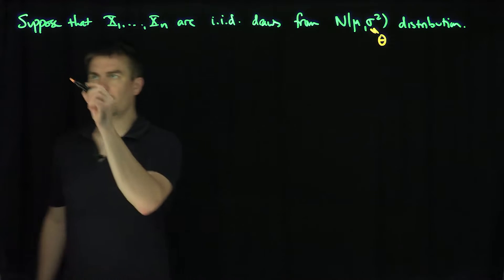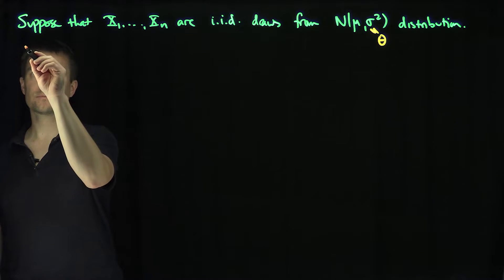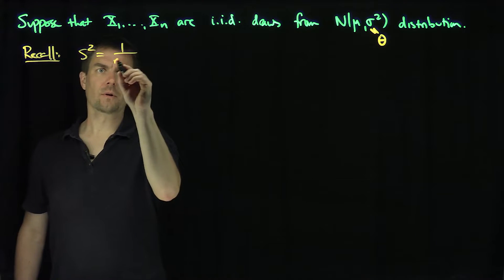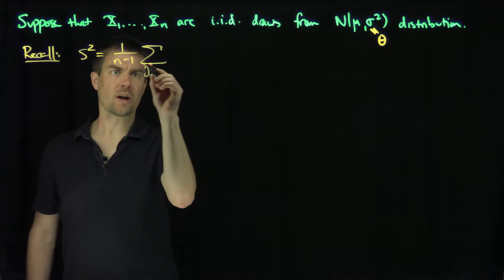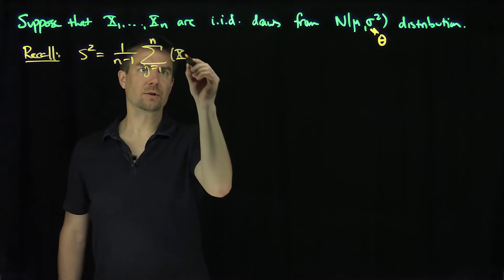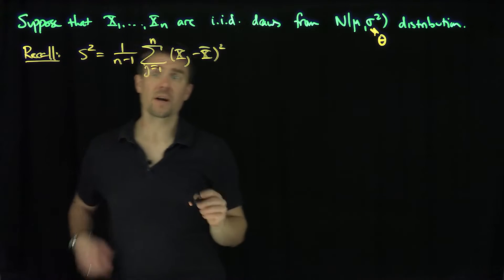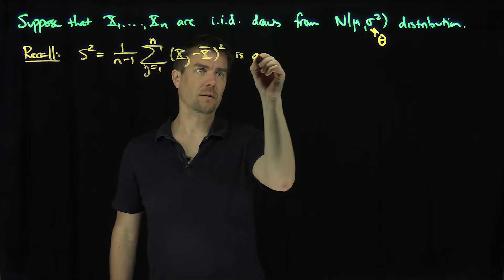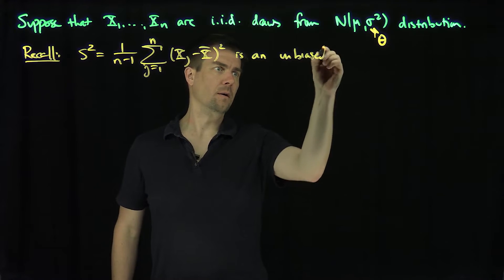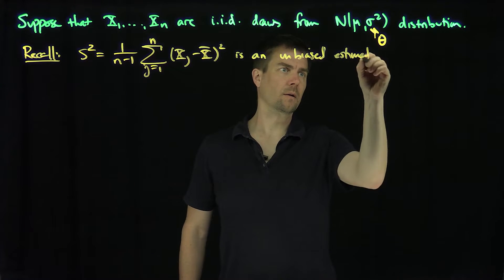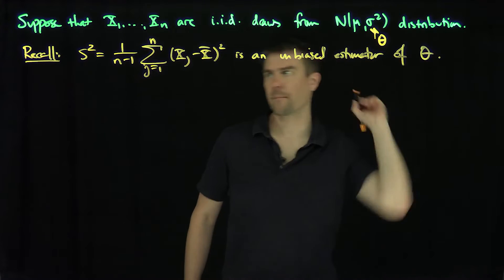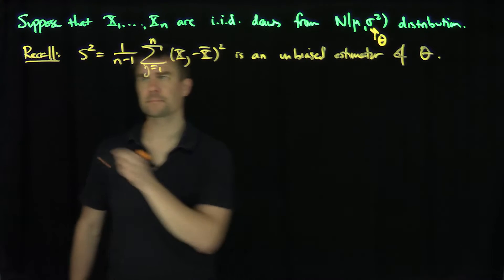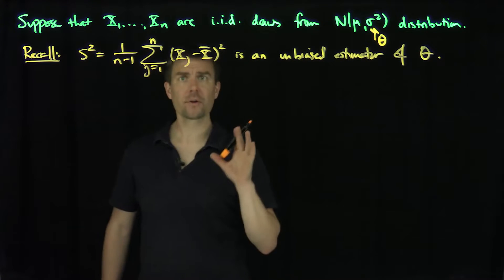So what is the efficiency? Recall that S², which is 1 over (n−1) times the sum from j=1 to n of (xj − x̄)², is the sample variance, and it is an unbiased estimator of theta. We also know that (n−1)S²/θ is chi-squared with n−1 degrees of freedom. We'll use that later in this video.